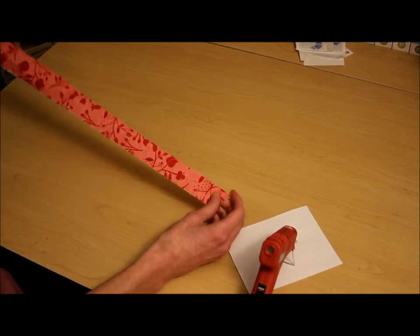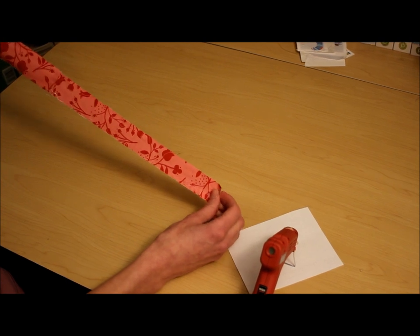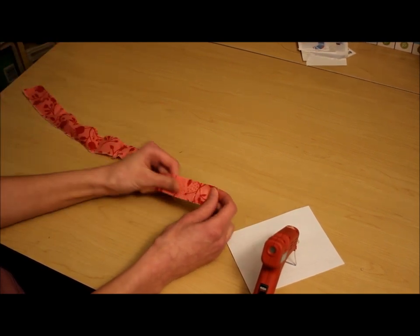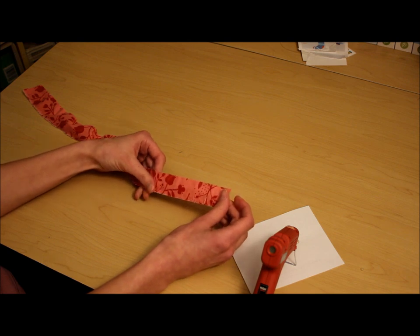To start, you need a strip of fabric about two feet long, depending on how big you want the rose to be, and about an inch wide, maybe an inch and a quarter to an inch and a half.